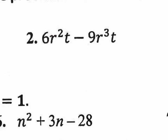Let's move on to number 2. Again, we're going to pull out the GCF, so we need to look at both terms — it's a little easier because there's only two terms. The 6 and the 9, the greatest common factor you could pull out is a multiple of 3. Now we look at the letters. There are R's in both: 2 here and 3 here. So the maximum we could pull out at the same time is R². So there is our GCF so far.